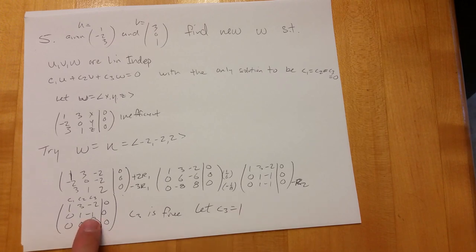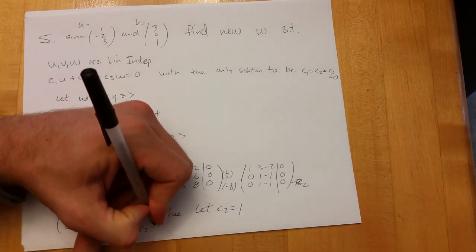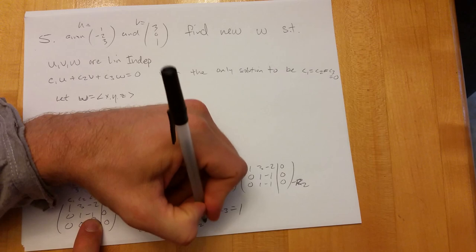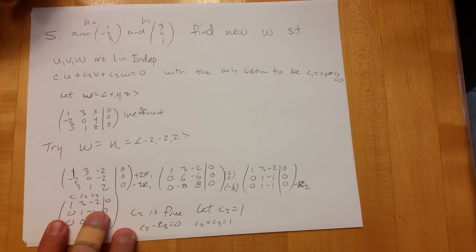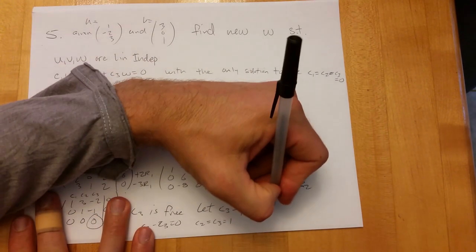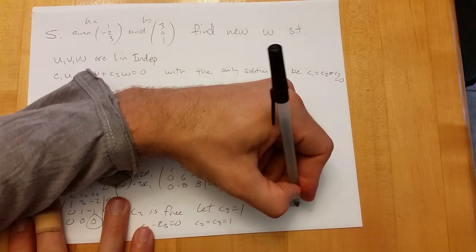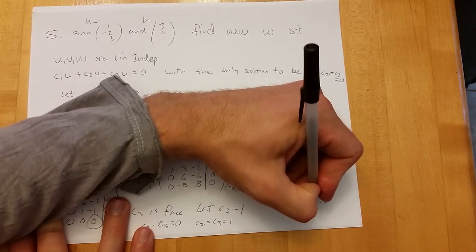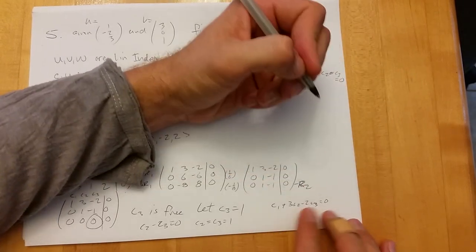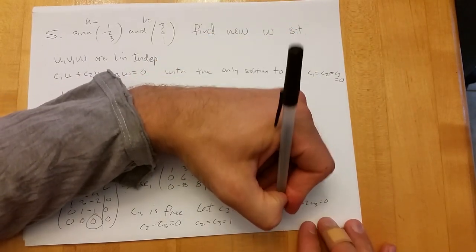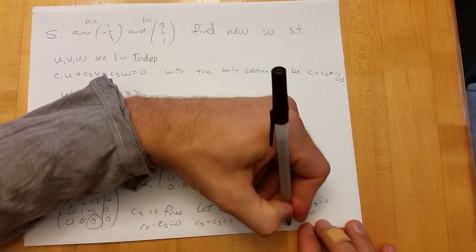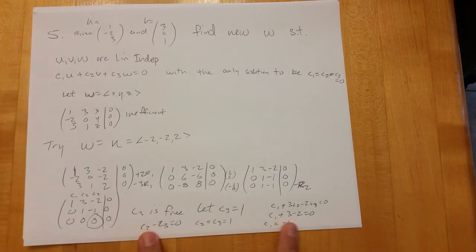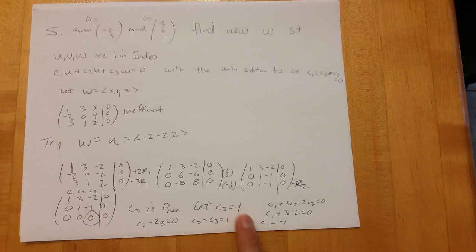So I could easily go and plug it in. I see that c2 minus c3 equals zero, so c2 is equal to c3, which is one. And then jumping way up to equation one, we have c1 plus 3·c2 minus 2·c3 equals zero. Plugging in one and one, we have c1 plus three minus two equals zero. Three minus two is one, so c1 equals negative one. There's our linear combination: negative one, one, one that will give us zero.